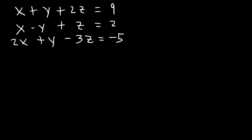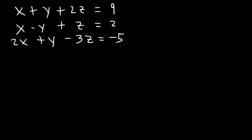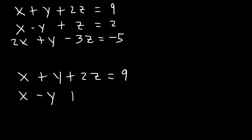Now there are three equations. We need to combine two at a time. Notice that if we add equation 1 and 2, the y variables will cancel. So let's go ahead and combine these two equations. Let's add x plus y plus 2z with x minus y plus z.